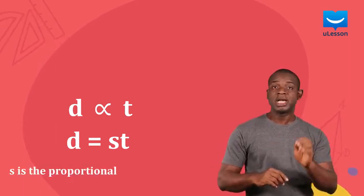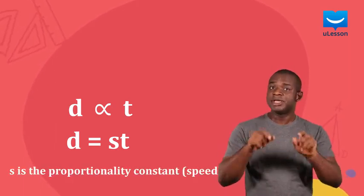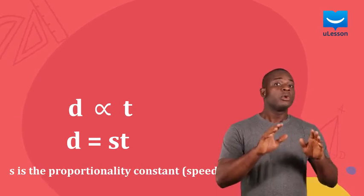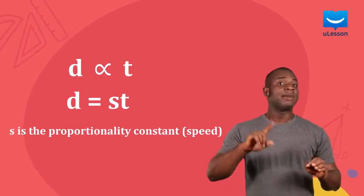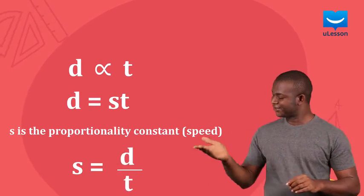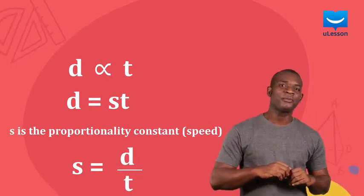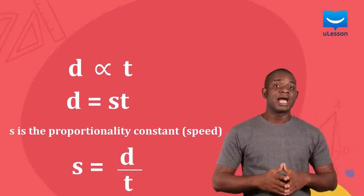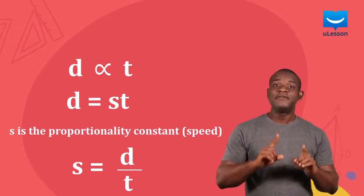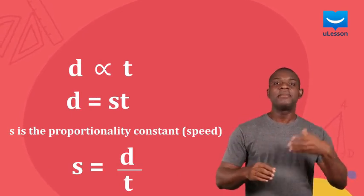S is the proportionality constant, which is the speed in this case. We can divide both sides by T to get this. What this means is that we find speed by dividing distance covered by time taken.